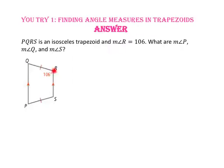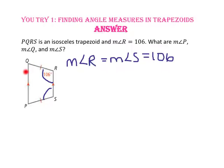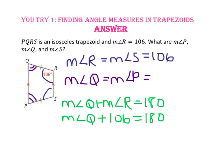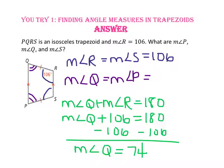Since segment QP is parallel to segment RS, those are the bases of the trapezoid, which means the base angles are congruent. Angle R is congruent to angle S, and angle Q is congruent to angle P. Since angle Q and angle R are same side interior angles, they are supplementary. So the measure of angle Q plus the measure of angle R equals 180. Subtracting 106 from both sides, the measure of angle Q equals 74. Since angle Q is congruent to angle P, both measures are 74.